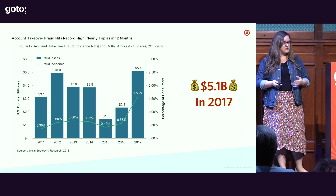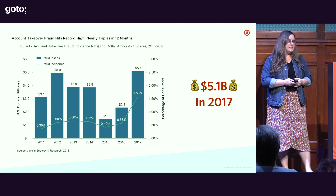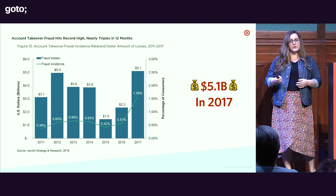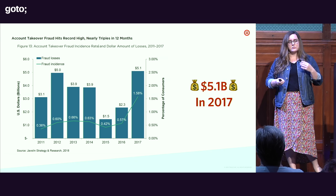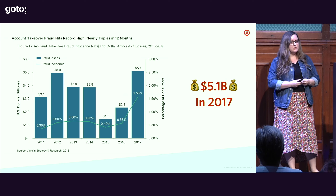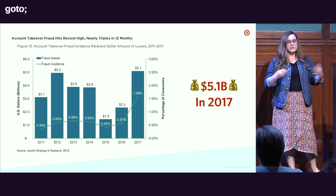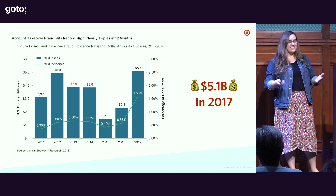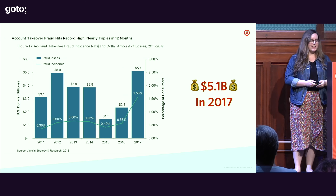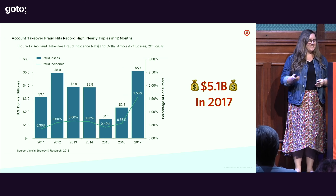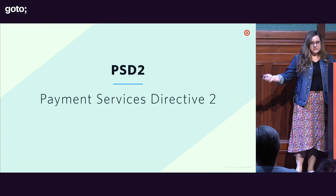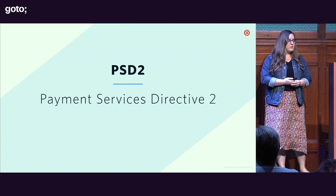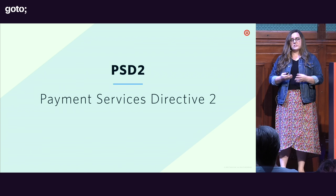You can see a dip in fraud around 2015 — that was when chips were inserted into credit cards, which helped decrease the amount of fraud. Then people found ways to get around that, and now it's creeping back up again, leading to the regulatory requirements we see today, especially in Europe.